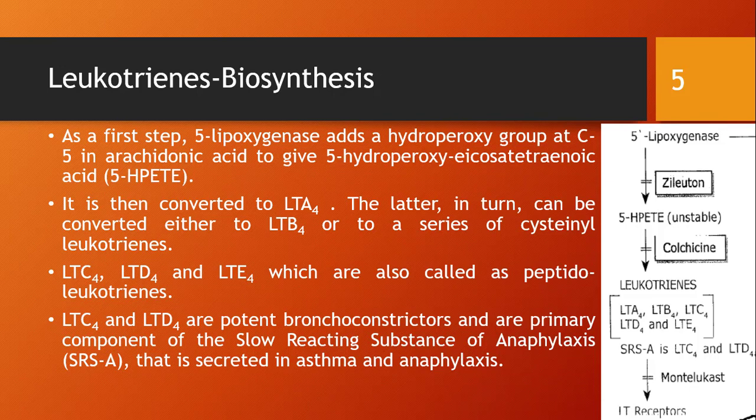LTC4, LTD4, and LTE4 are collectively known as cysteinyl leukotrienes because they contain a cysteine amino acid in their structure. They are also called peptidoleukotrienes. LTC4 and LTD4 are potent bronchoconstrictors and are primary components of the slow-reacting substance of anaphylaxis, secreted in asthma and anaphylaxis.